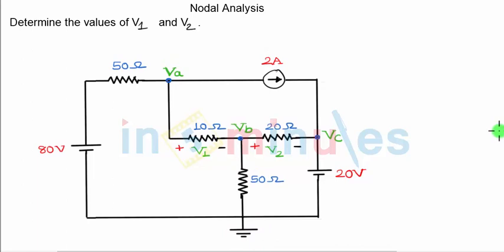So that means because there are three nodes, we will have to apply three KCL equations and solve them simultaneously to get the values of VA, VB, and VC. If you observe, V1 will be VA minus VB upon 10 ohm, and V2 will be VB minus VC upon 20. So to find V1 and V2, we will first have to get VA, VB, and VC.